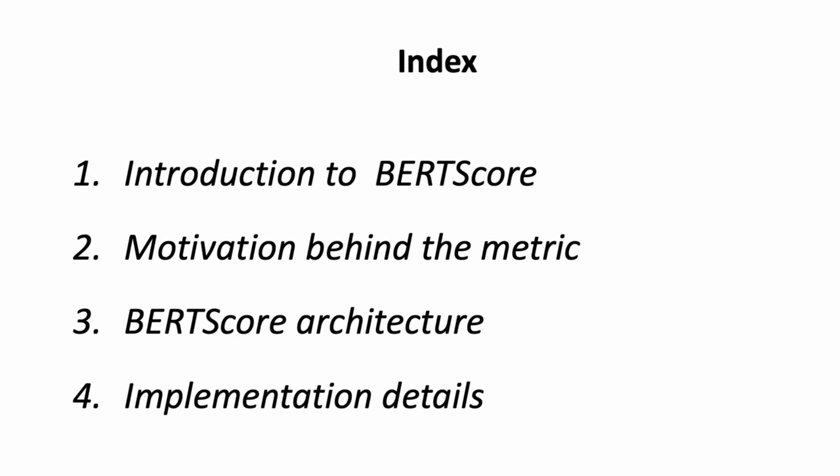BERTScore is a metric for evaluating the quality of text generation models such as machine translation or summarization. It utilizes pre-trained contextual embeddings for both the generated and reference text and then calculates the cosine similarity between these embeddings. It is an automatic evaluation metric used to test the goodness of a text generation system, unlike existing popular methods that compute token-level syntactic similarity. BERTScore majorly focuses on computing the semantic similarity between tokens of references and hypothesis.